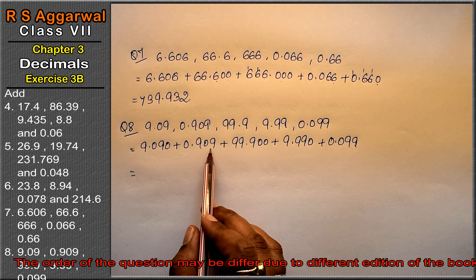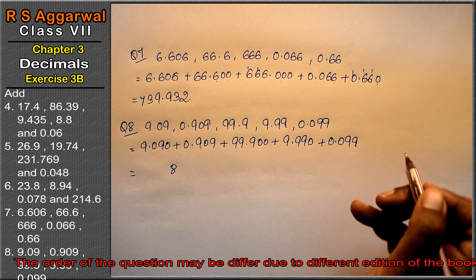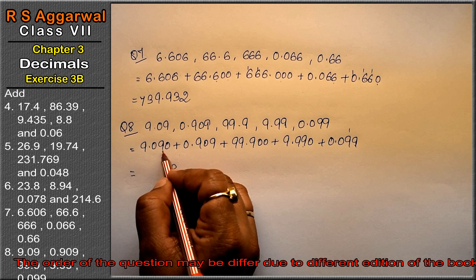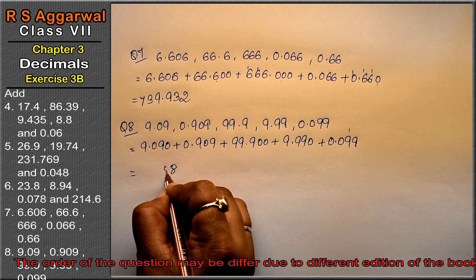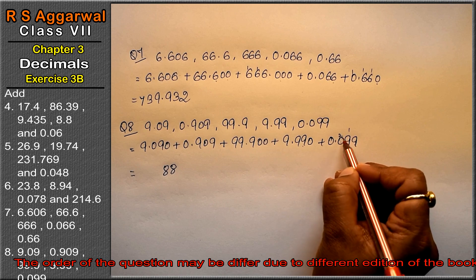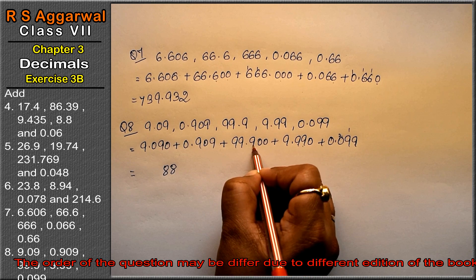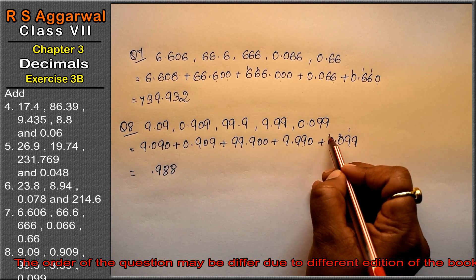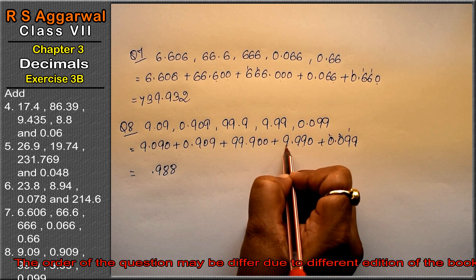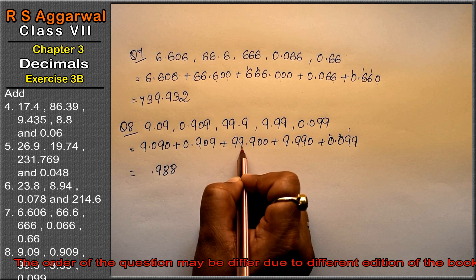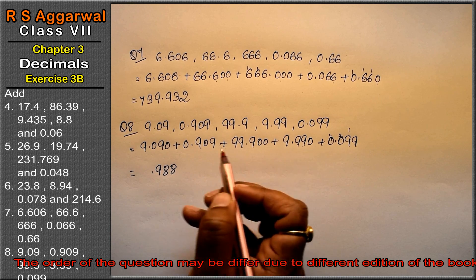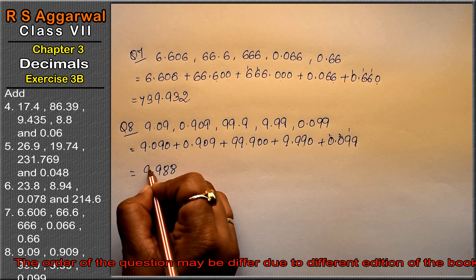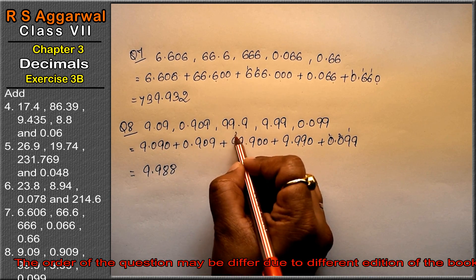9 and 9 is 18; 18 and 9 is 27 — no, 9 is 28. Write 8, carry 2. 11 and 9 is 20, write 29. Carry 2: 9, 10, 11, 19; 11 and 9 is 20; 20 and 9 is 29, carry 2.